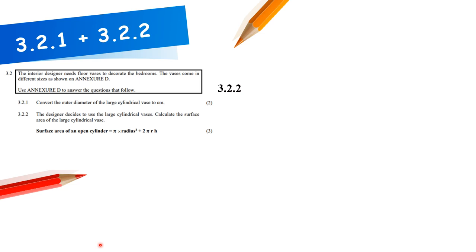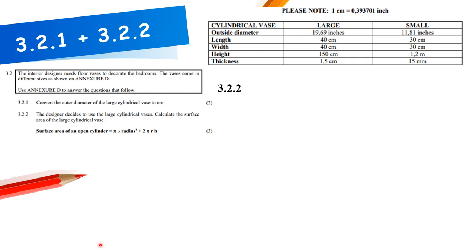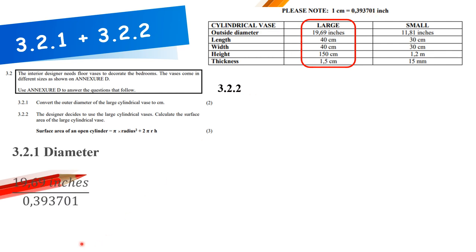Next worksheet questions use Annexure D. Convert the outer diameter of the large cylindrical vase to centimeters. The diameter is given in inches. Conversion factor: 1 cm = 0.393701 inches. Dividing by the full conversion factor (do not round it), the outer diameter is 50.01 cm.